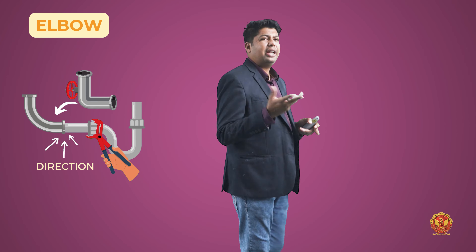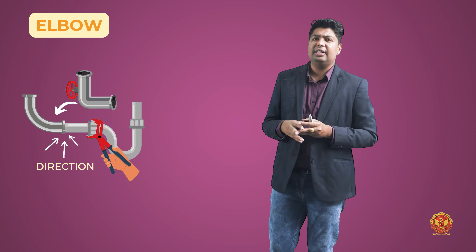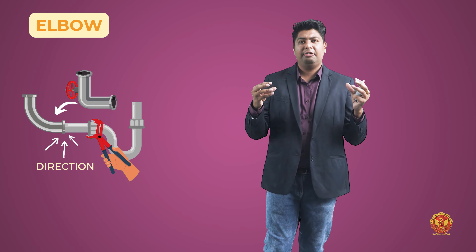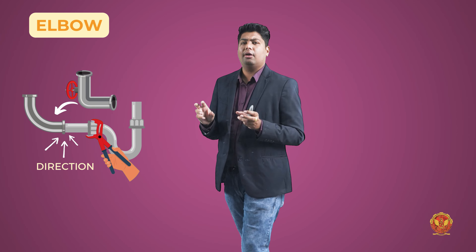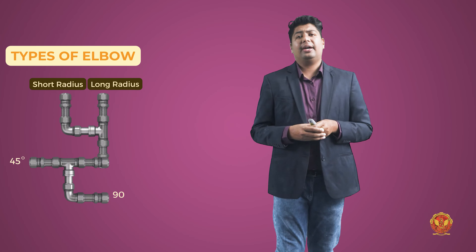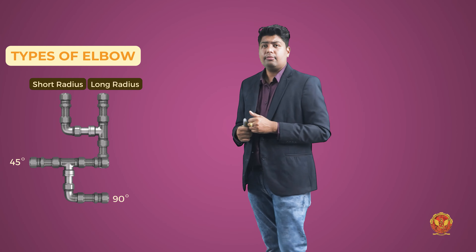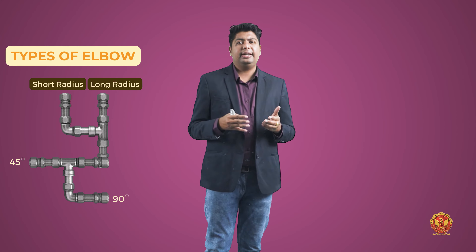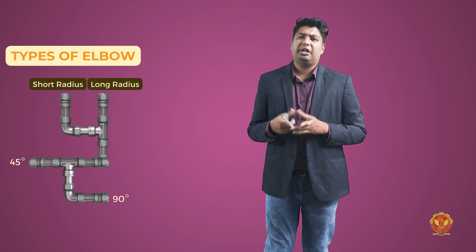If we want to change the direction — whether it's 90 degrees or 45 degrees — then we use an elbow. The elbow allows you to change direction; one side's dimension can be different from the other. There are two types: short radius and long radius elbows. Generally in the market you will find 90-degree elbows and 45-degree elbows.